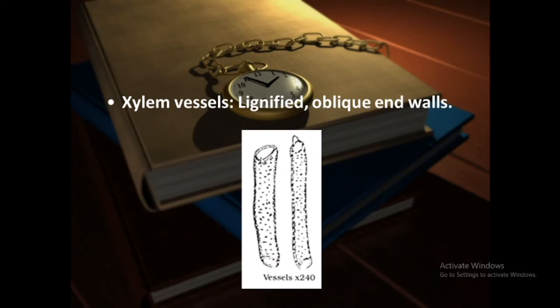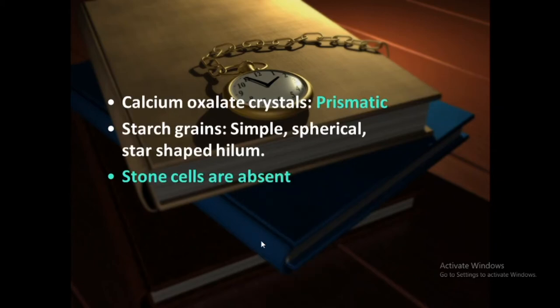Xylem vessels are lignified with oblique end walls — this is an important identification characteristic of Rauwolfia powder. Prismatic calcium oxalate crystals are present in Rauwolfia, and spherical starch grains are also present. Stone cells are absent, as discussed earlier. Prismatic calcium oxalate crystals and spherical starch grains are two important microscopic characteristics of Rauwolfia powder.